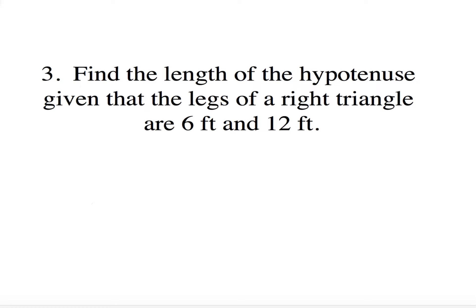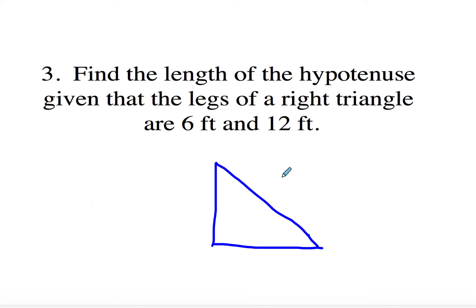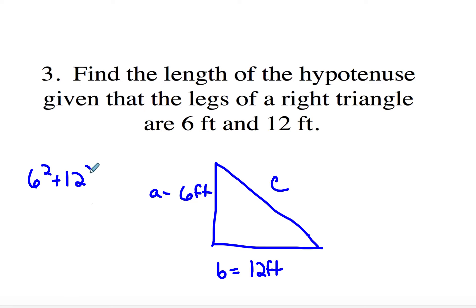We're finding the length of the hypotenuse given that the legs of the triangle are 6 feet and 12 feet. You could draw your right triangle to visualize it better. We're trying to find the hypotenuse. This is 6 feet and this is 12 feet. So this is A and this is B. We're going to have 6 squared plus 12 squared is equal to C squared, which is 36 plus 144.